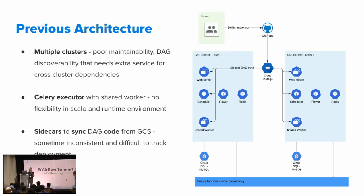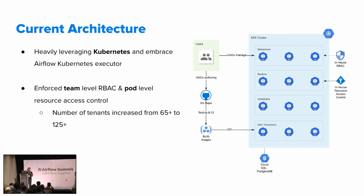To give you more context, here's the architecture back in 2018. Each team had their own cluster — we had more than 60 individual clusters. This provided some isolation at the team level. However, this isolation also made it difficult to discover data from other teams. Since teams at Snap work very closely and often have dependencies across teams, we had to build an actual server just for checking cross-cluster dependencies, plus other maintainability issues.